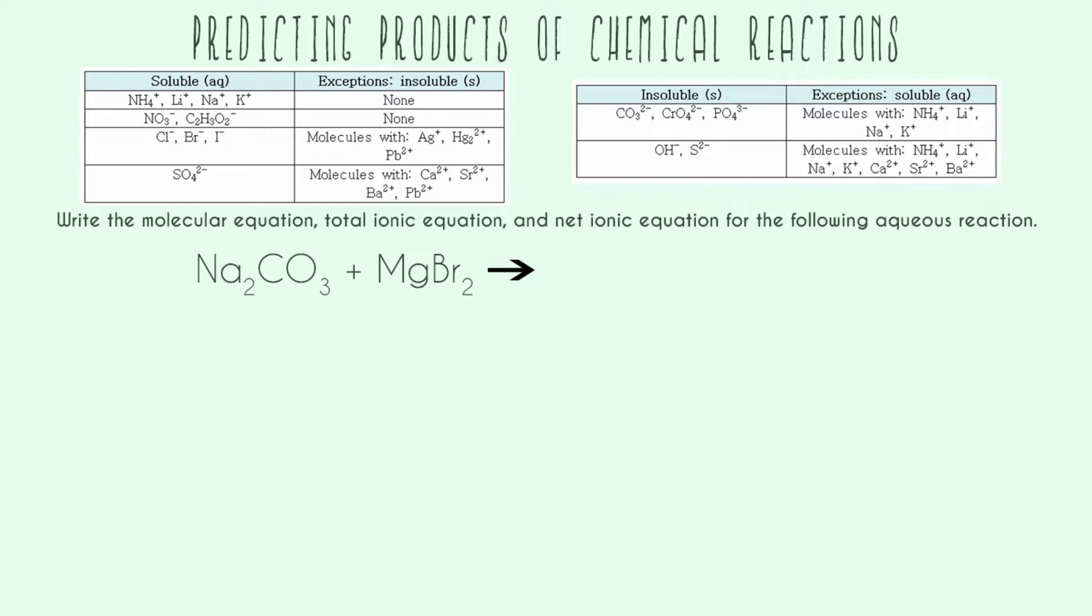The two things you're really going to need to know are one, your common ion list. It's good to have that with you. You need to be able to pick those out and know what their charges are going to be. And also for the monatomic ions, the ones that are just one atom, what are their charges going to be when they're an ion.